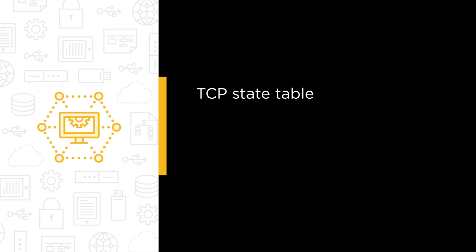In this course we're going to learn how the TCP state table allows traffic to flow from networks we trust to networks we don't trust and back again. We're going to understand how we use NAT — specifically source NAT — to connect private networks to the internet, and we're going to understand what a DMZ is and why we use it.